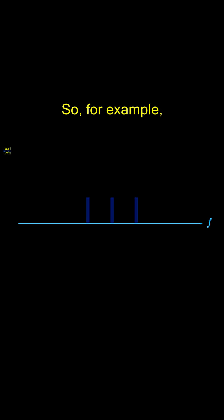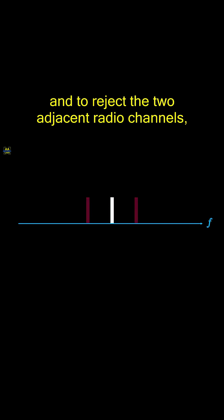So, for example, if you need to select one radio channel and to reject the two adjacent radio channels, this can be done with waveguide technology.